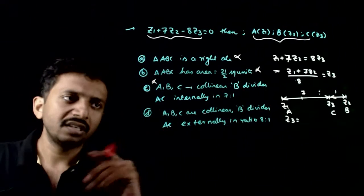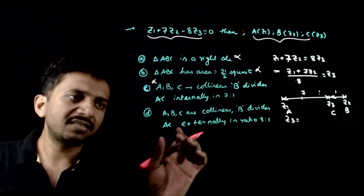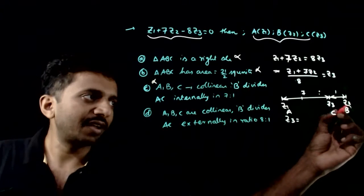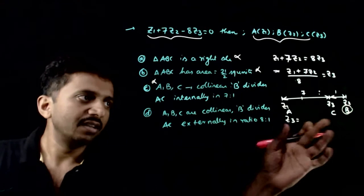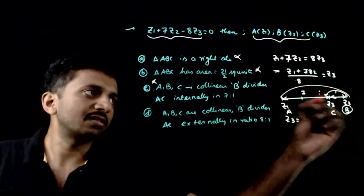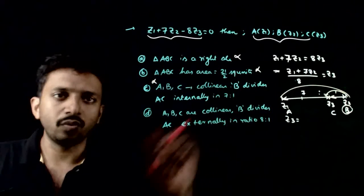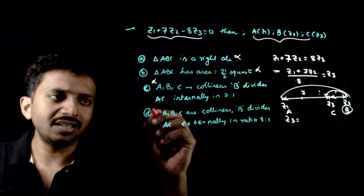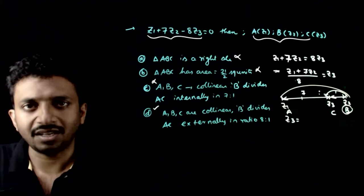So is this true? B divides AC in the ratio 8 to 1 externally. Consider B as the point which is dividing AC in the ratio this to this, 7 plus 1, which is 8 to 1. So B divides AC in the ratio 8 to 1 is right. Option D is the right answer.